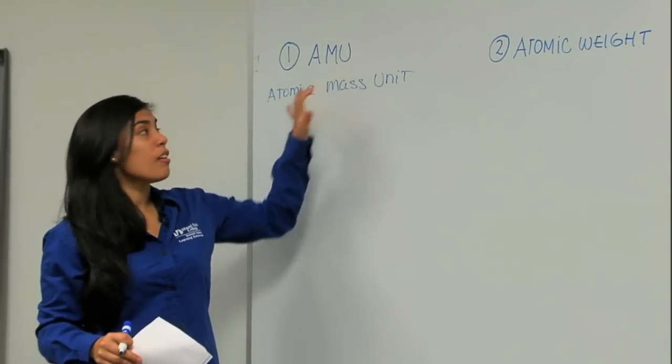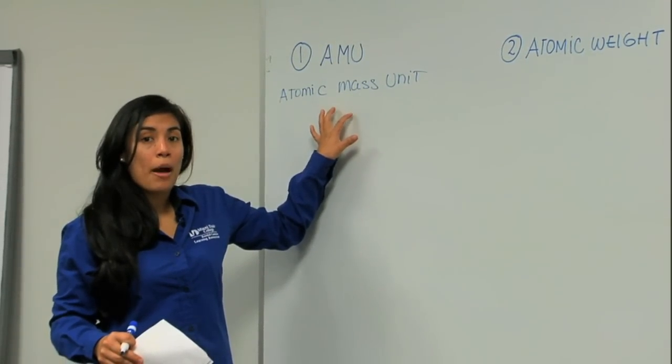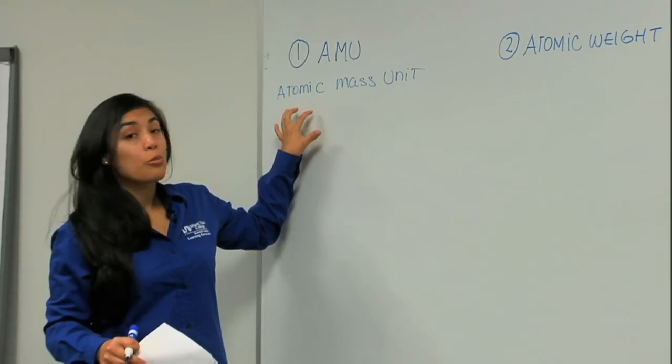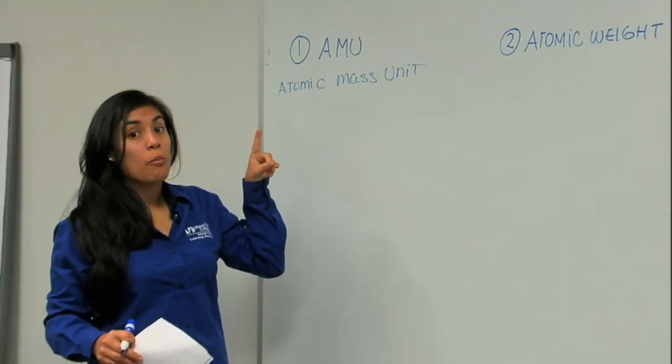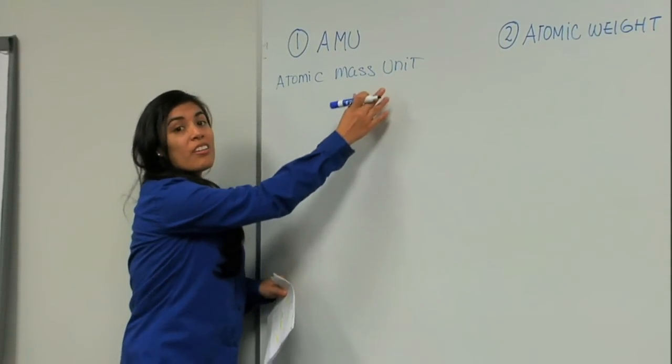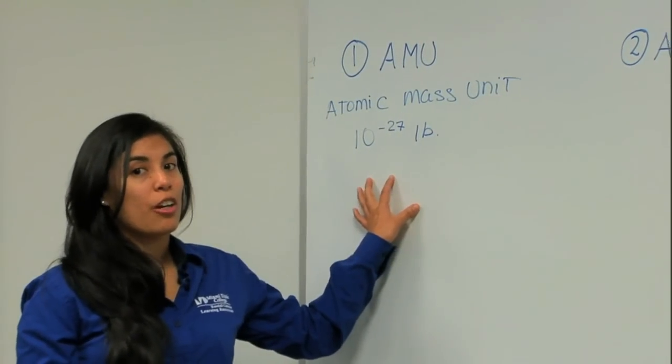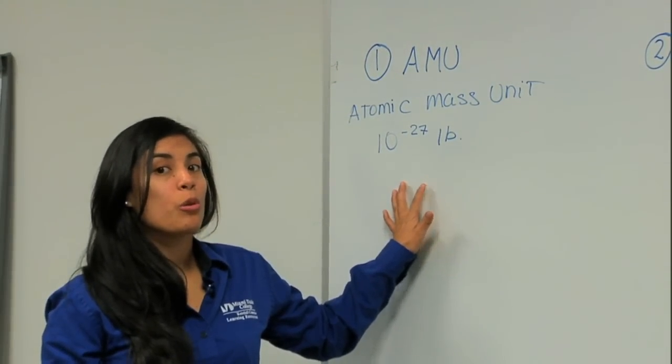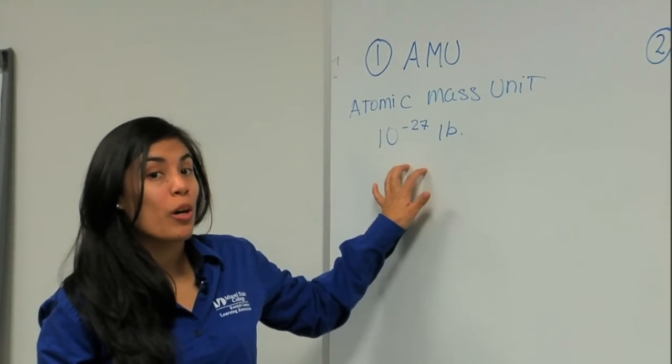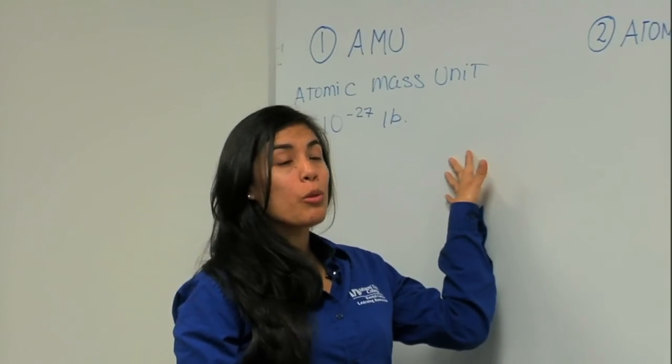And as the name says it, it is a mass that we need to find out for one atom only. Now, it is a very small unit. Imagine that it is in the order of 10 to the negative 27 pounds. So imagine it's very, very small. One grain of sand would be much heavier than one AMU.